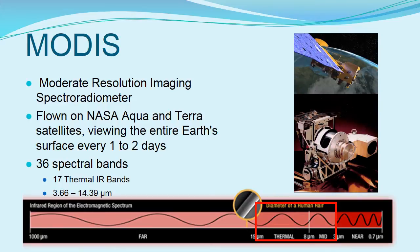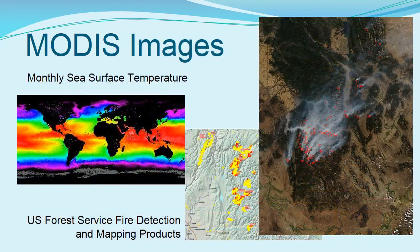NASA's MODIS, or Moderate Resolution Imaging Spectroradiometer, covers wavelengths across the entire thermal infrared spectrum, making it useful for both fire detection and for analyzing properties of objects in less extreme temperature ranges. NASA develops monthly sea surface temperature products using MODIS thermal bands. The US Forest Service uses MODIS to detect active fires, issuing GIS-ready fire detection data.